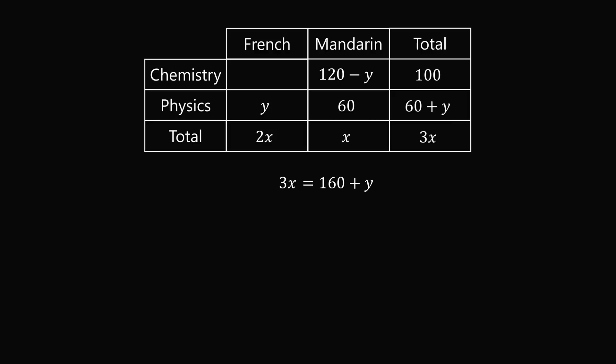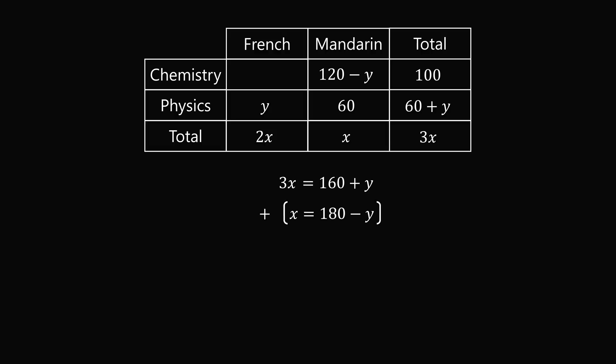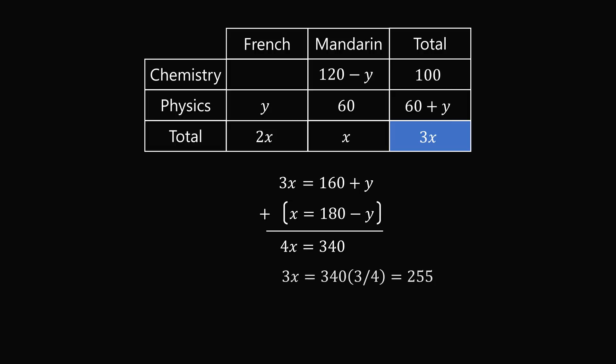Now let's look at the total number of students that study Mandarin. This will be 180 minus y, but we also know that this is equal to x. So we have x is equal to 180 minus y. We will now add up these two equations to cancel out the y variable. So we get 4x is equal to 340. We want the total number of students, which is represented as 3x. So we multiply both sides by 3 over 4, and that gives 3x is equal to 340 times 3 over 4, which is equal to 255.